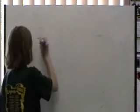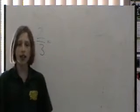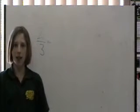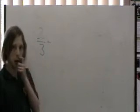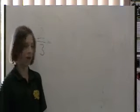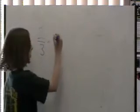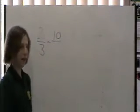This time we'll do 2 thirds. Instead of using 2 this time, you can multiply the numerator and the denominator by any number. Let's choose 5 this time. So 2 times 5 is 10, and 3 times 5 is 15.